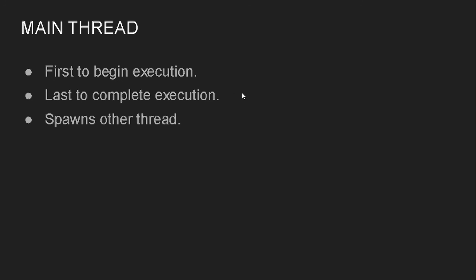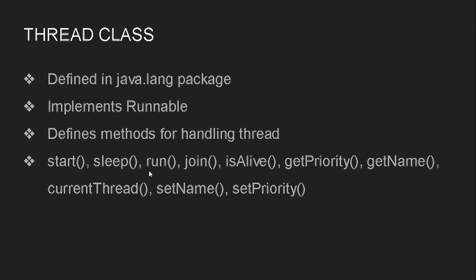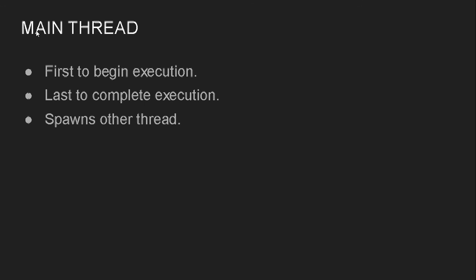After that we have the main thread. Whenever we write a main method, the Java program automatically creates a separate thread for the main function. The entry point of a thread starts from run(), but that is for custom threads. For the main thread, the entry point is the main method itself. So whenever you write a main method, the Java program automatically creates a main thread. The main thread is the first to begin execution and completes last, and using the main thread you can create other threads as well.